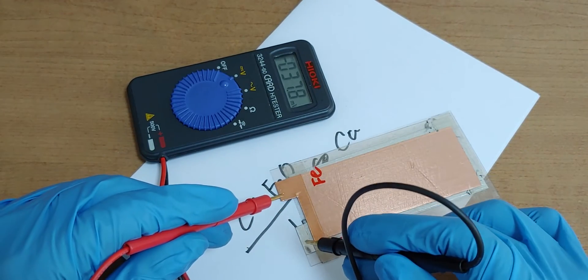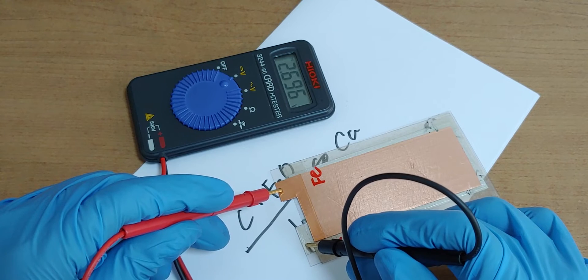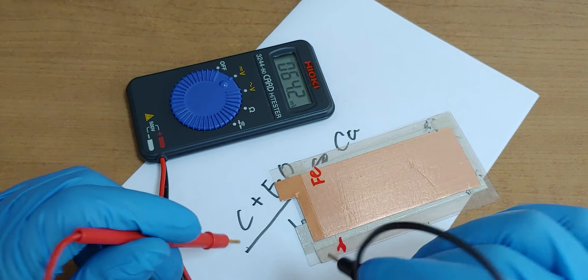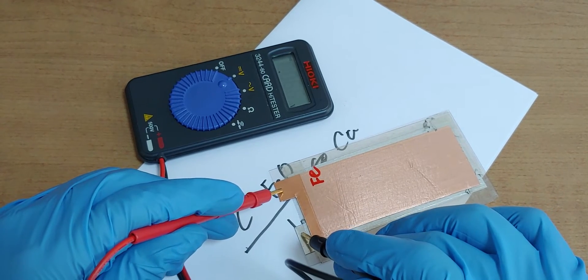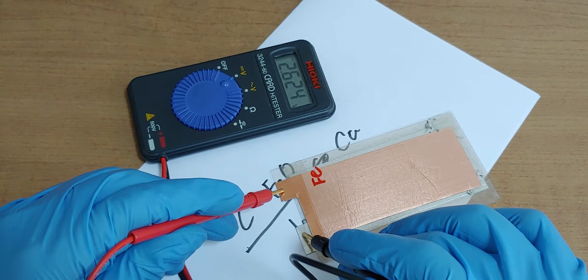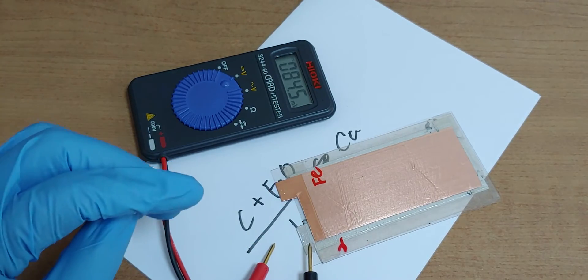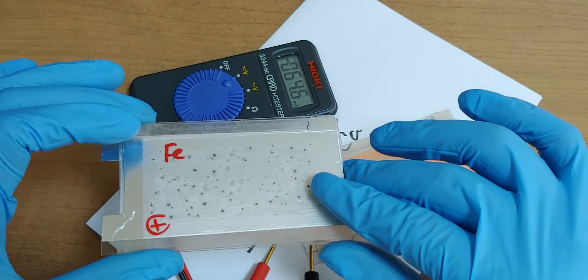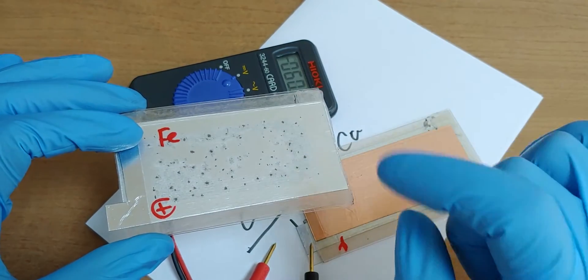And then 2.6V. But the voltage drops. The voltage also decreases. Whether I use aluminum or copper, the result is the same. The voltage decreases.